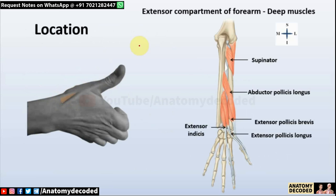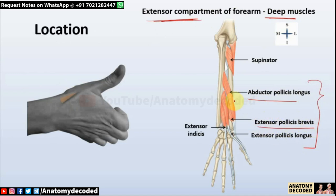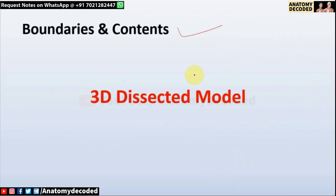To understand the various boundaries, we look at the muscles of the extensor compartment of the forearm — specifically the deep muscles. There are five deep muscles, and three of them form the boundaries of the anatomical snuff box. These three are: abductor pollicis longus, extensor pollicis brevis, and extensor pollicis longus.